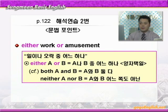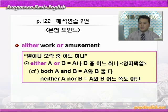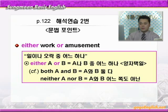바로 문법 포인트로 갑니다. 'Either work or amusement' — 일이나 오락 중 어느 하나. 'Either A or B' 하면 'A나 B 둘 중에 어느 하나' 이런 얘기입니다. 양자택일을 나타내죠. 참고로 A와 B 양쪽 모두 다를 지칭할 때는 'both A and B' — A와 B 둘 다. A와 B 양쪽 모두를 부정하는 것이라면 'neither A nor B' — A와 B 어느 쪽도 아닌, 이것을 쓰면 되겠습니다.